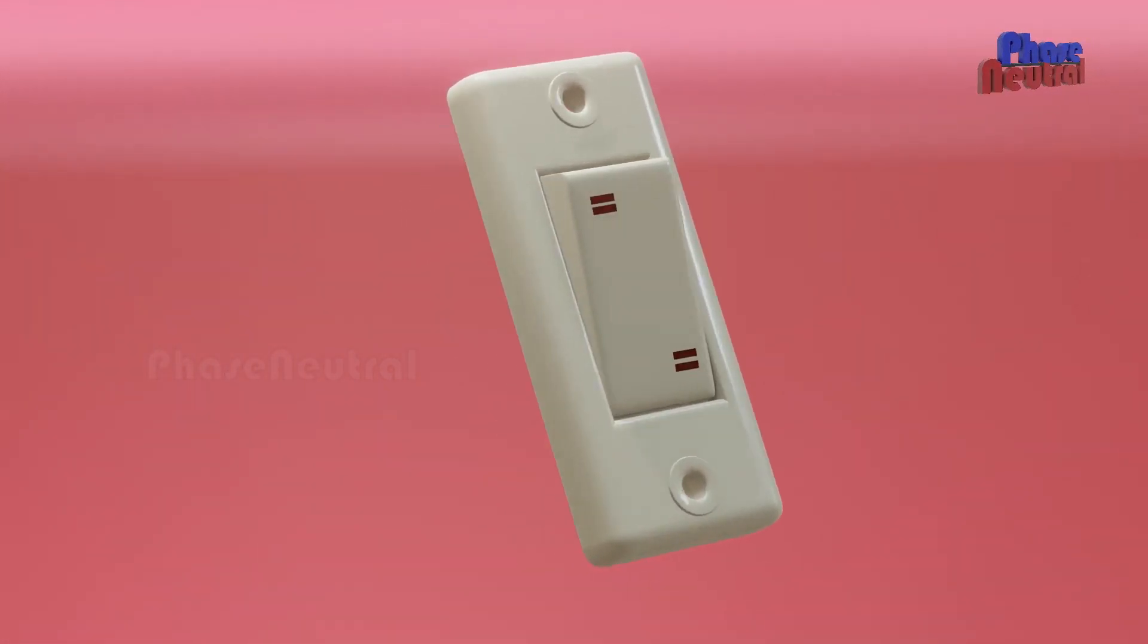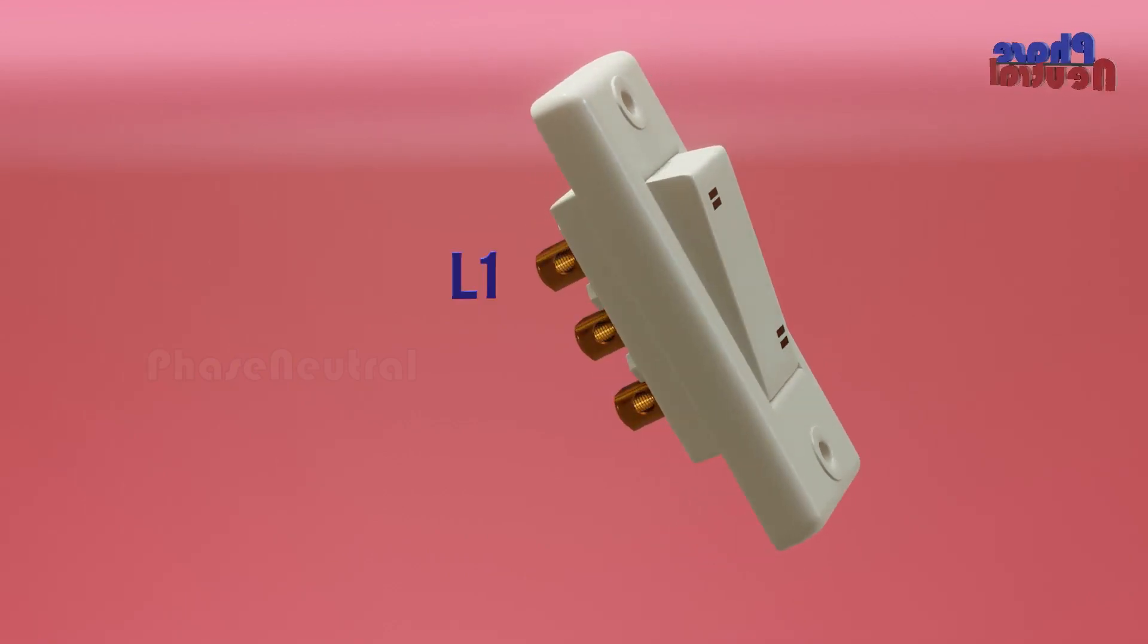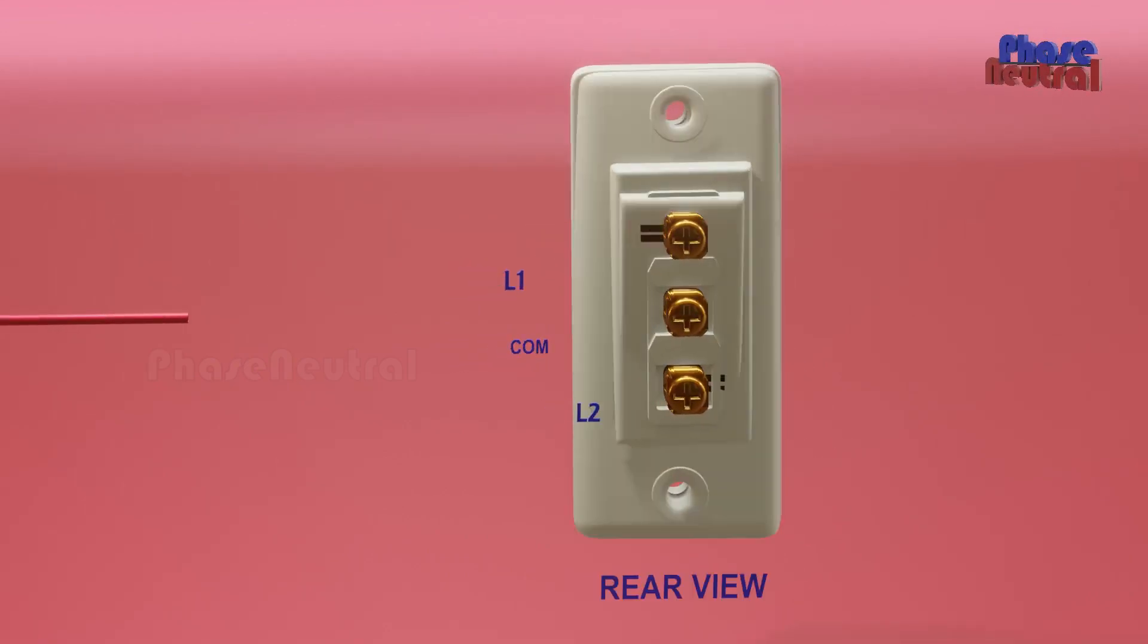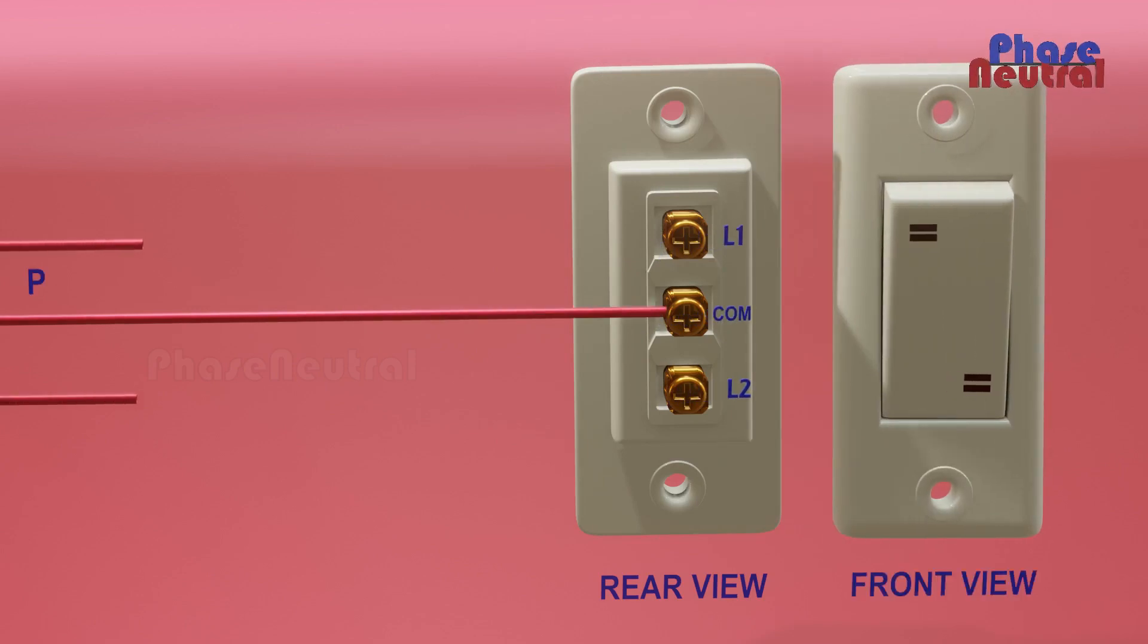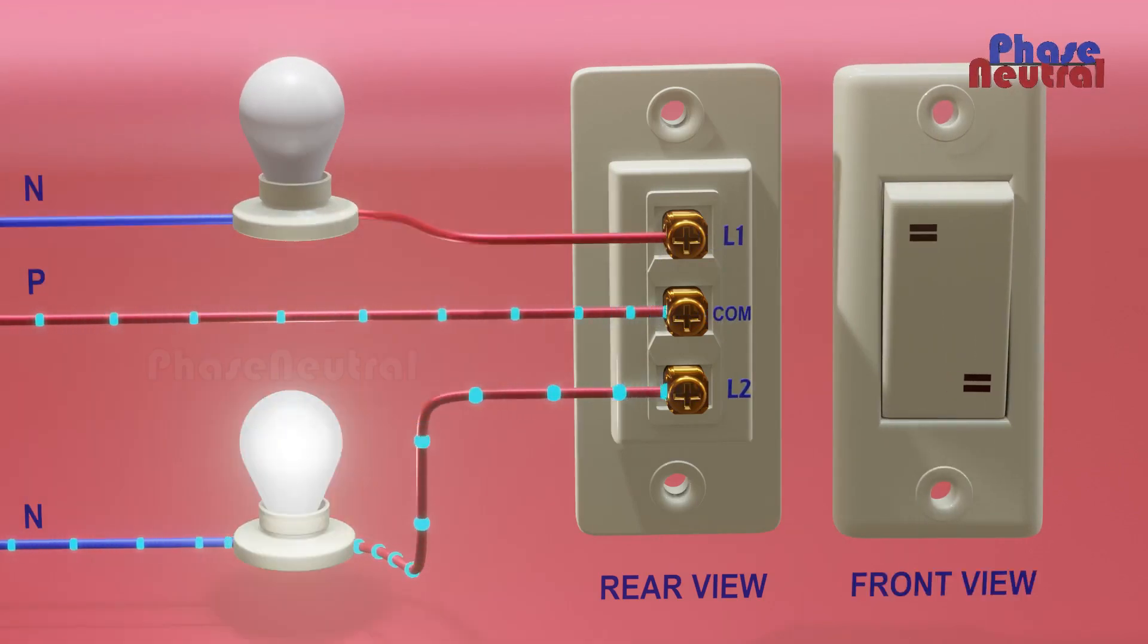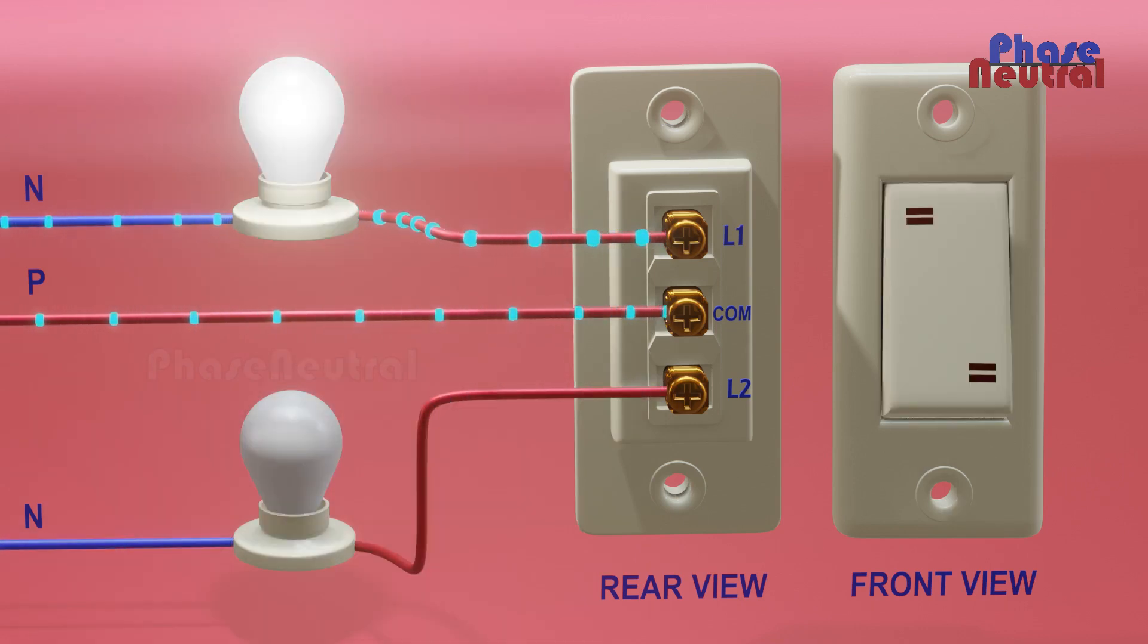Two-way switch has three terminals: L1, common, and L2. When you connect a phase line to the common terminal while the switch is in on position, current flows to L2 from common. And when the switch is in off position, current flows to L1 from common.